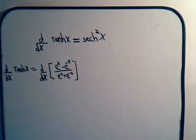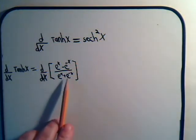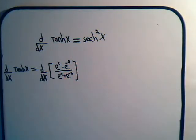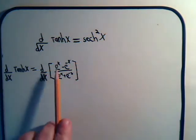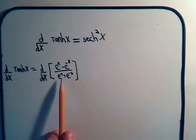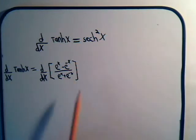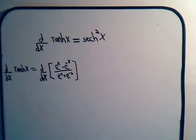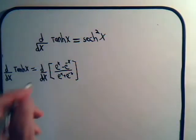That is going to equal this times the derivative of this, minus this times the derivative of this, and that whole expression is divided by this quantity squared. So let's go and do that.